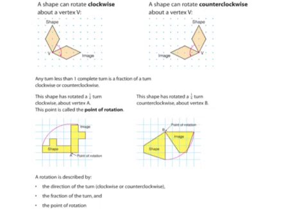When you are looking at shapes to describe their rotation, you want to pick one line and find that same line on the image, and draw your half circle, quarter circle, three-quarter circle, or whatever the case may be, to that line. Then you can see: is this a quarter of a circle, a half a circle, or a three-quarter? We've chosen this line and that same line on the image, and we can see that it's making a quarter turn counterclockwise about vertex V. V is our rotation point — the point that we are turning around, our point of rotation.